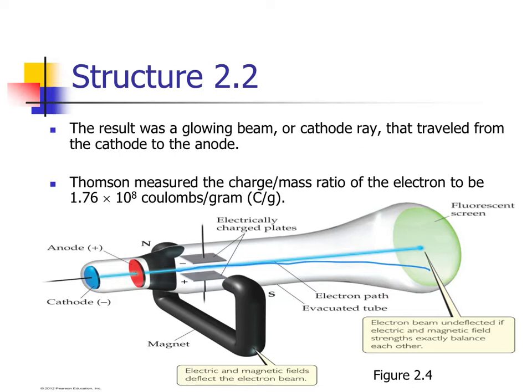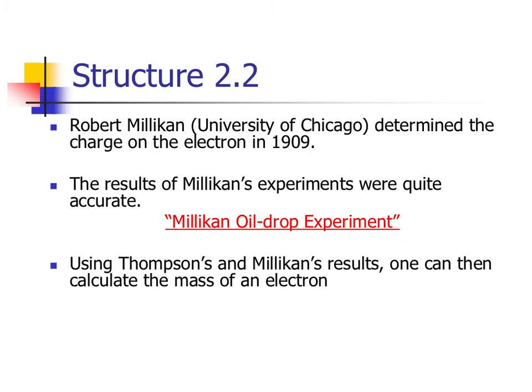Thomson wasn't the only person working with the electron. Robert Millikan at the University of Chicago actually determined the actual charge on the electron, and from that gives us the mass of the electron. Because of Thomson and Millikan's work combined, we can find the mass. Millikan's experiment is known as the oil drop experiment.